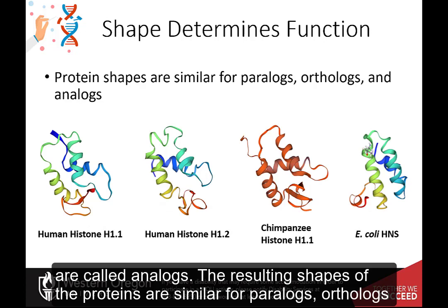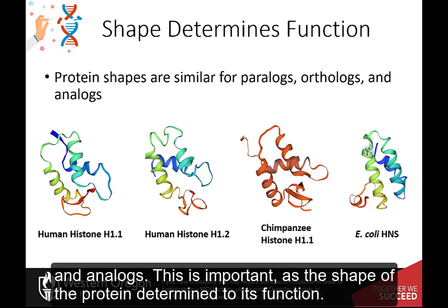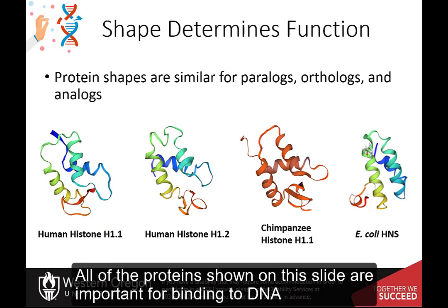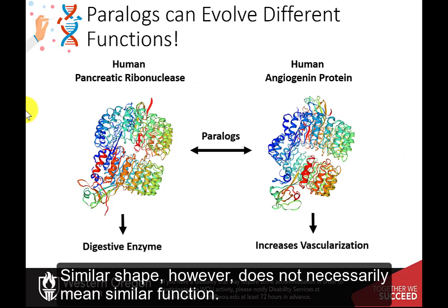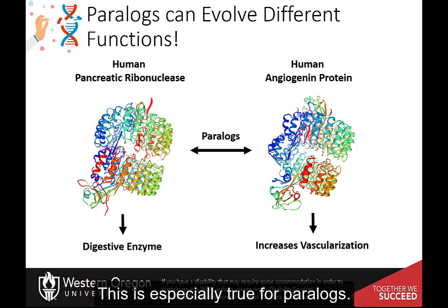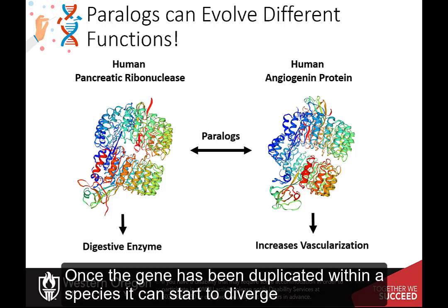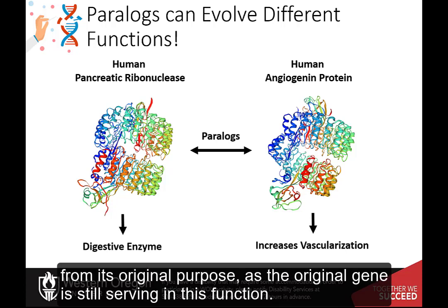The resulting shapes of the proteins are similar for paralogs, orthologs, and analogs. This is important, as the shape of the protein determines its function. All of the proteins shown on this slide are important for binding to DNA and share a helix-loop-helix conformation. Similar shape, however, does not necessarily mean similar function — this is especially true for paralogs. Once a gene has been duplicated within a species, it can start to diverge from its original purpose, as the original gene is still serving in that function.